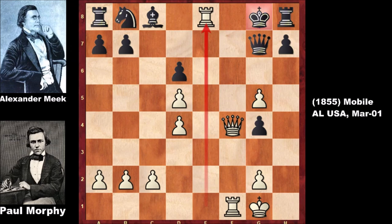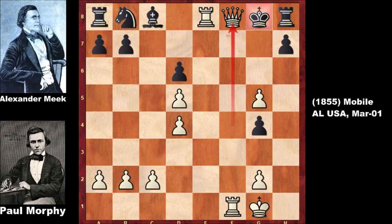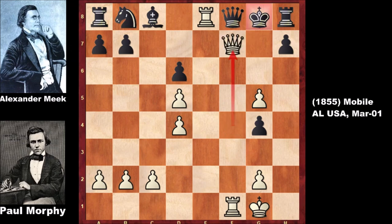The possible continuation is obvious — blocking with the queen, then capturing the queen, queen takes on f8, checkmate. There is no defense and black is getting checkmated. But Morphy was an artist — he liked to checkmate his opponent in an aesthetic way. So maybe Morphy would play queen to f7, checkmate. The queen is protected — look at this final position. What a beautiful checkmate, what a beautiful final position. What a game by Paul Morphy! Thank you for watching and I hope to see you next time.